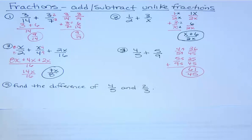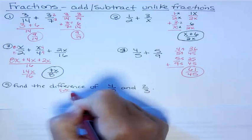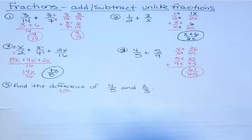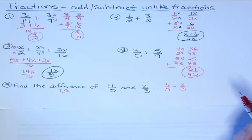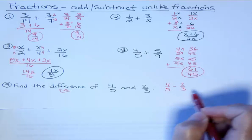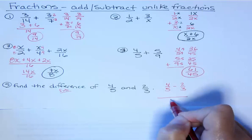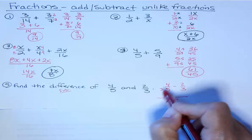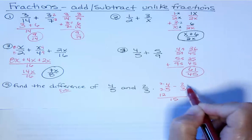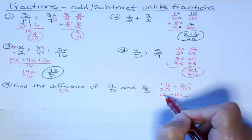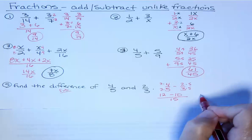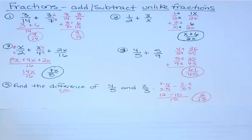Finally, what if it says 'find the difference of two numbers'? A difference means subtraction, so I know I have a subtraction problem. Whatever is stated first goes first, so it's 4/5 minus 2/3. I'm going to use the horizontal method. The common denominator for 3 and 5 is 15. I multiply 4 times 3 to get 12, and 2 times 5 gives me 10, and I'm subtracting — 12 minus 10 on the top gives me 2/15. Adding and subtracting use the same method, but you want to make sure you have a common denominator.